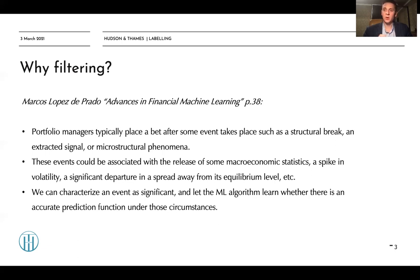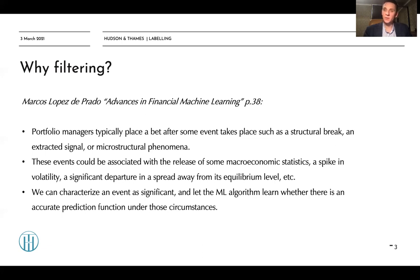Instead of trying to predict the market on each bar, we try to predict the market in some vulnerable or predictable state — that's what filtering does for us. We try to predict price action not on every session open or close, but rather try to understand what kind of events can happen which can dramatically change the dynamics of markets. Secondly, filtering makes our data more IID — independent and identically distributed — which is extremely important for various statistical algorithms and procedures. If you try to predict the market on each bar, your data is not IID, but if you filter it, your data will be much closer to IID.